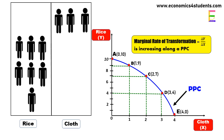As a result, rice production will be reduced by two units and the economy will shift to point C on the PPC, producing two units of cloth and seven units of rice.